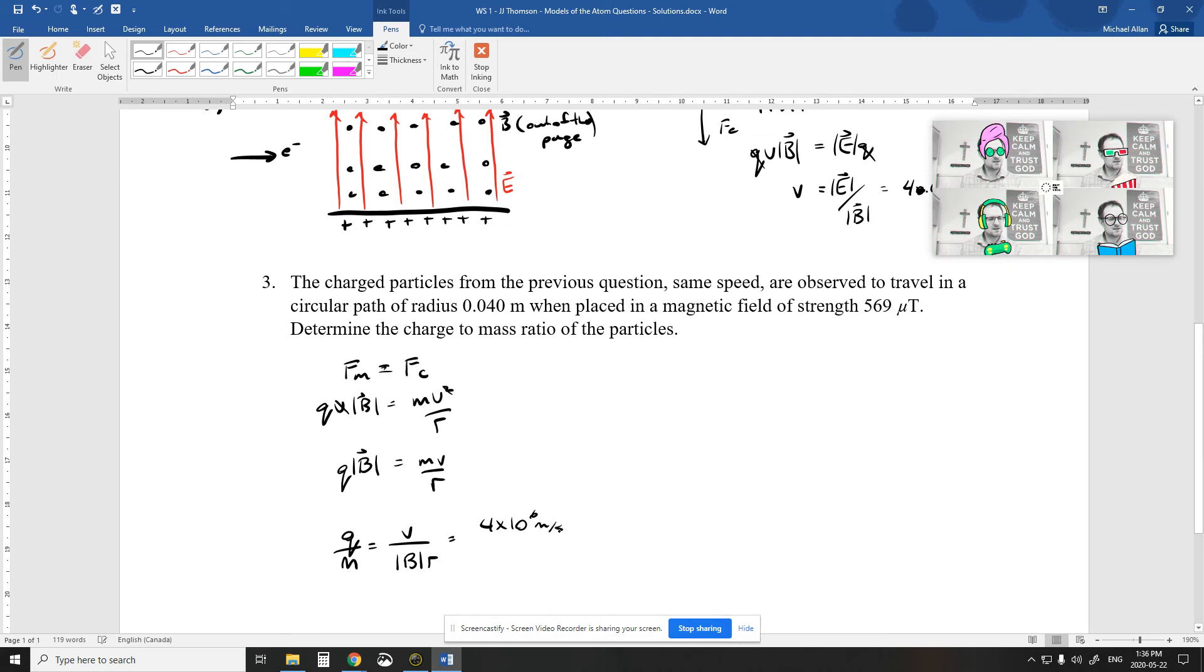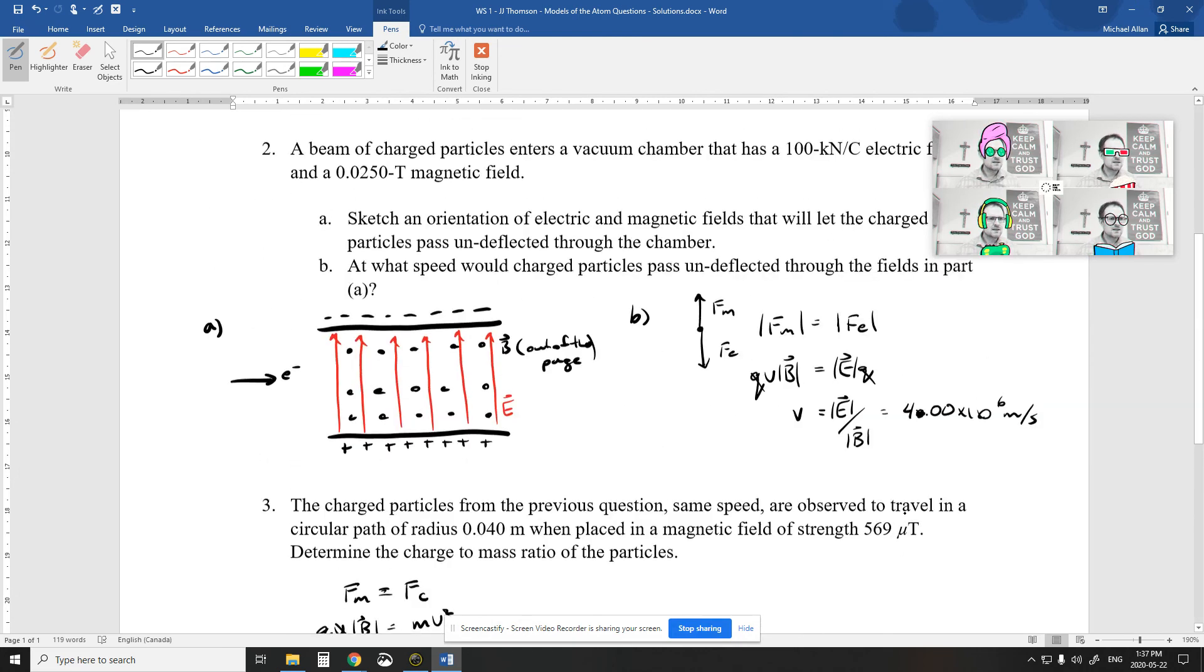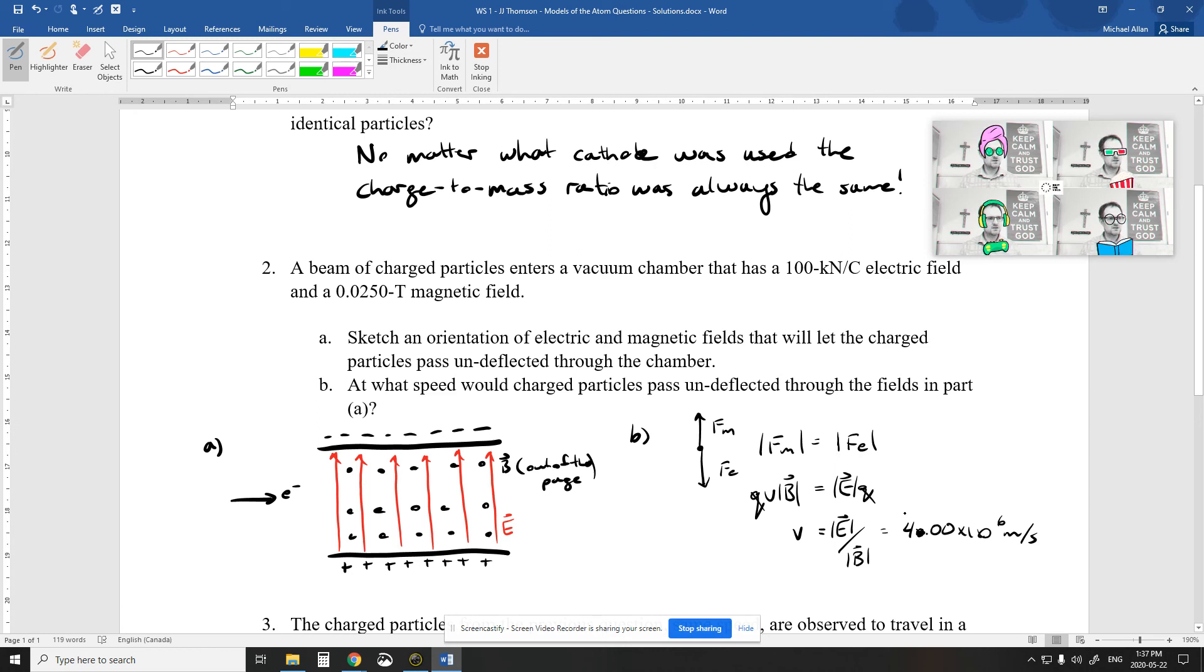So we got the 4 times 10 to the 6 from the previous question. We got the magnetic field of 569 micro teslas. And we got a radius of 0.04. Cool. Let's see what we have here. I'm going to change that into regular teslas. And I'm also going to divide by 0.04. And we get a 2.31 times 10 to the 11 coulombs. The times 10 to the 11 kind of tips me off that these are probably correct. Let me just double check if I did my math up here correctly. The number just seems a little bit off.